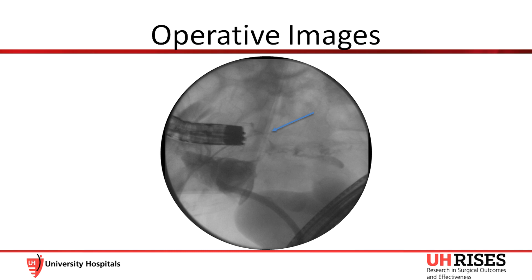We used APC cautery to fulgurate the overlying mucosa to allow better healing after endoscopic closure. Again, the fistula tract is identified by the arrow.